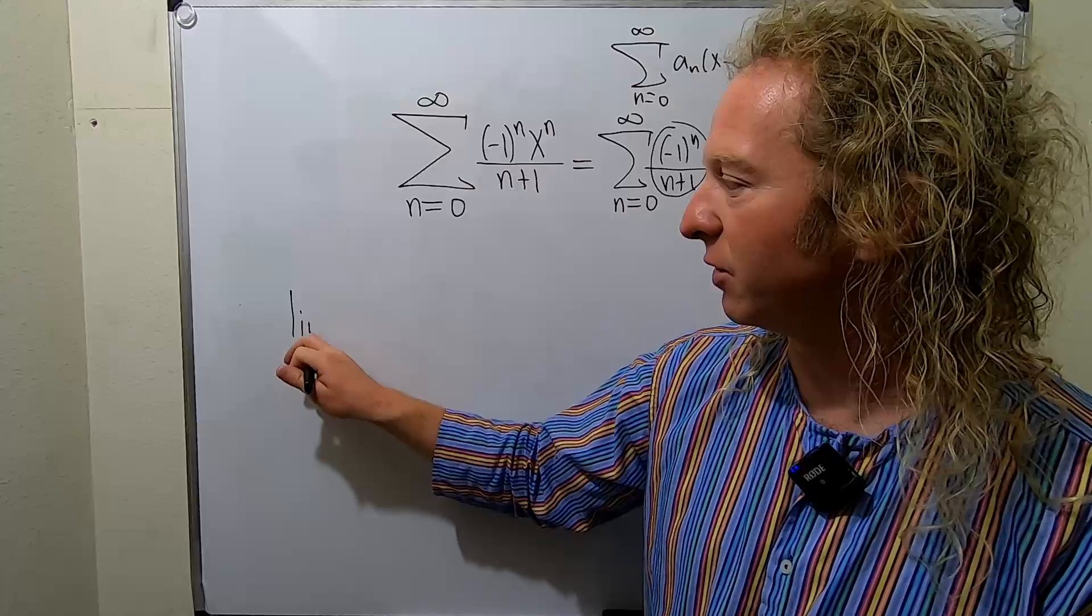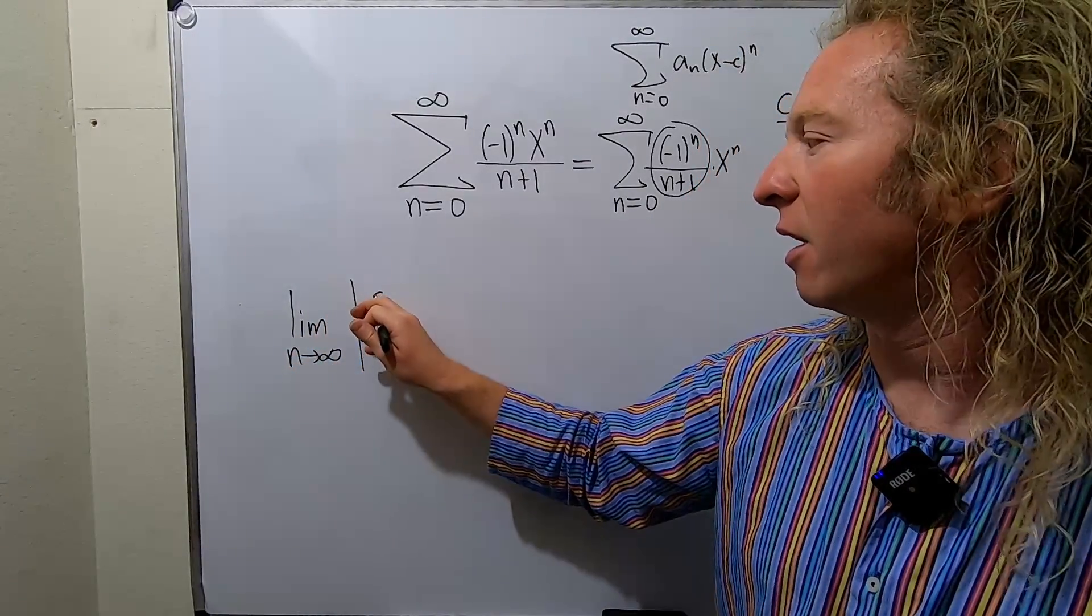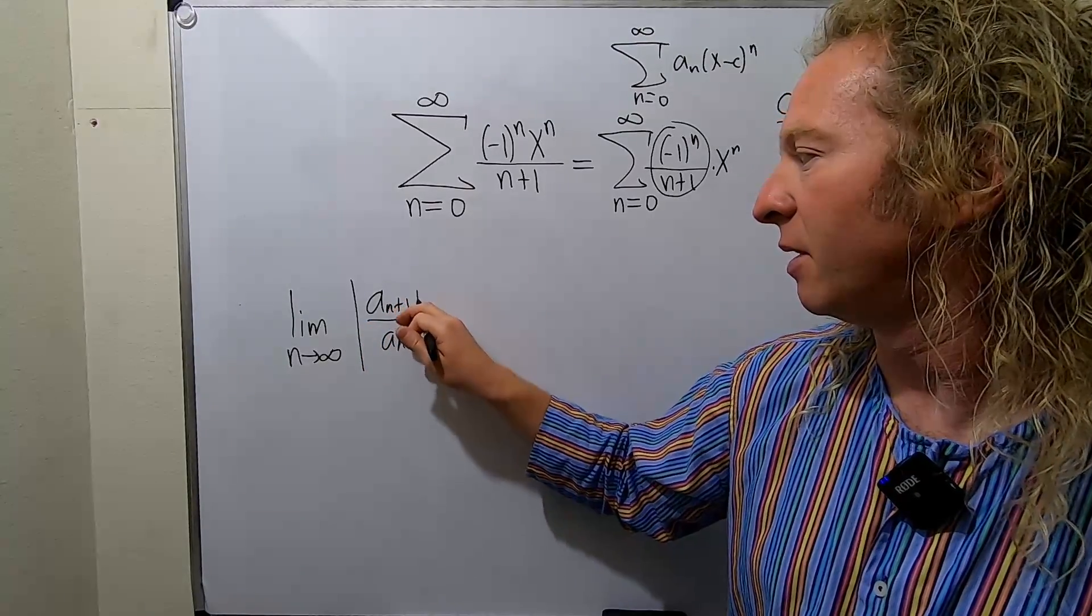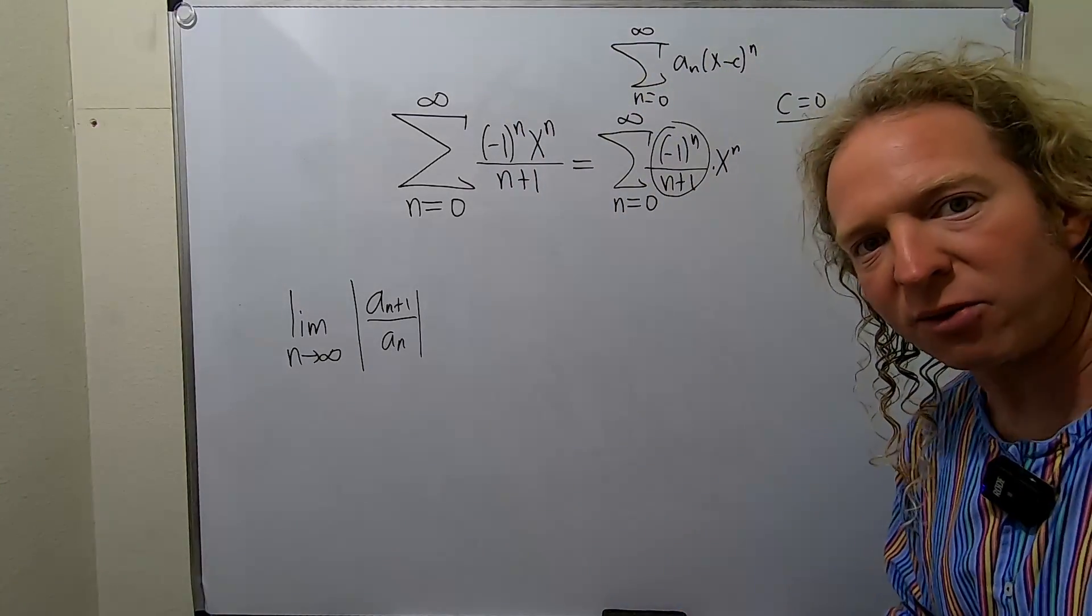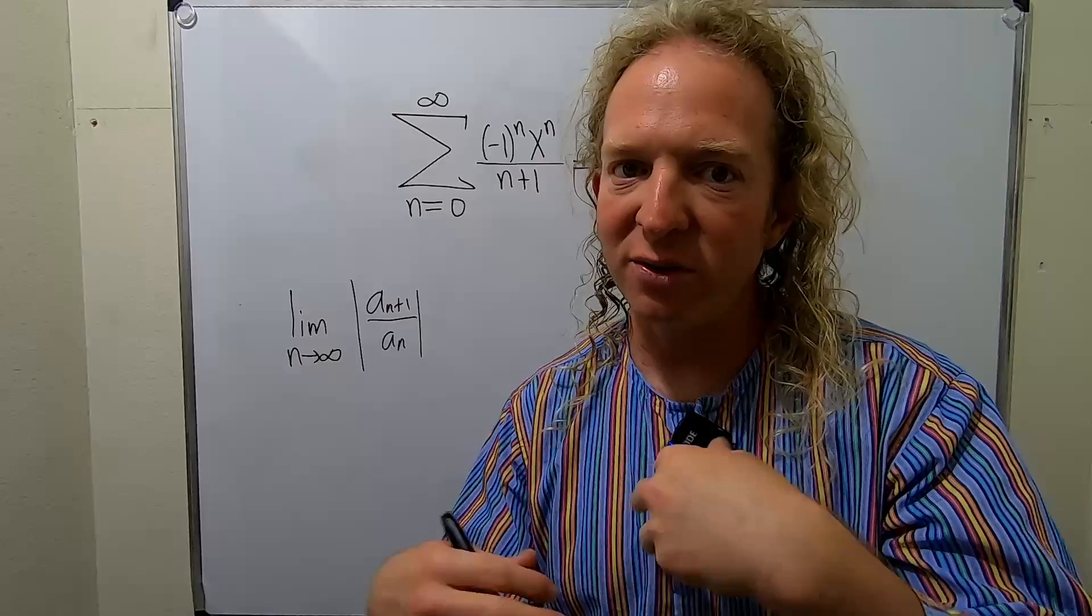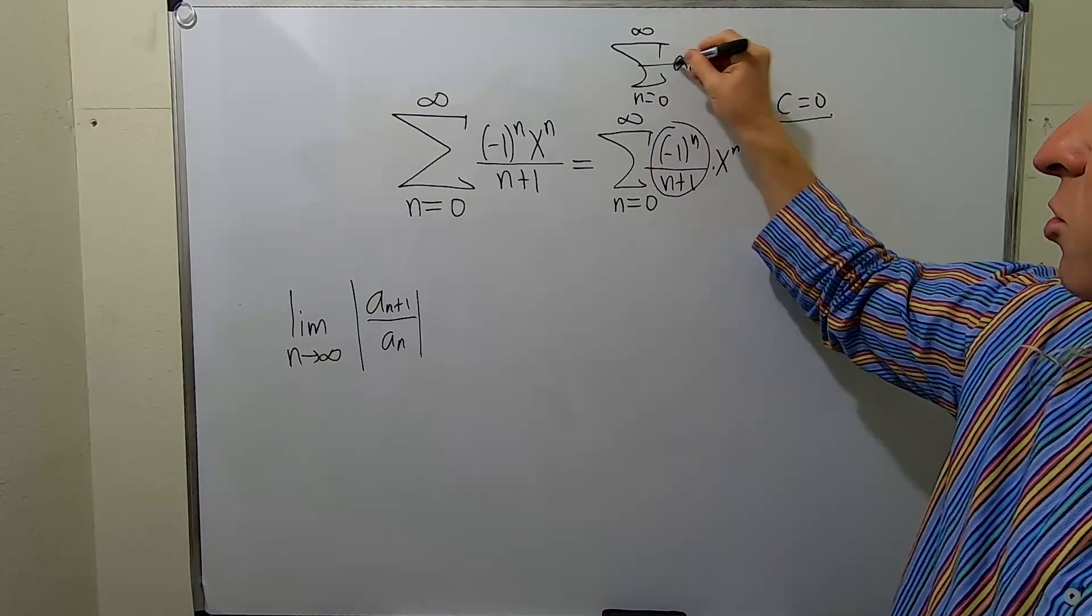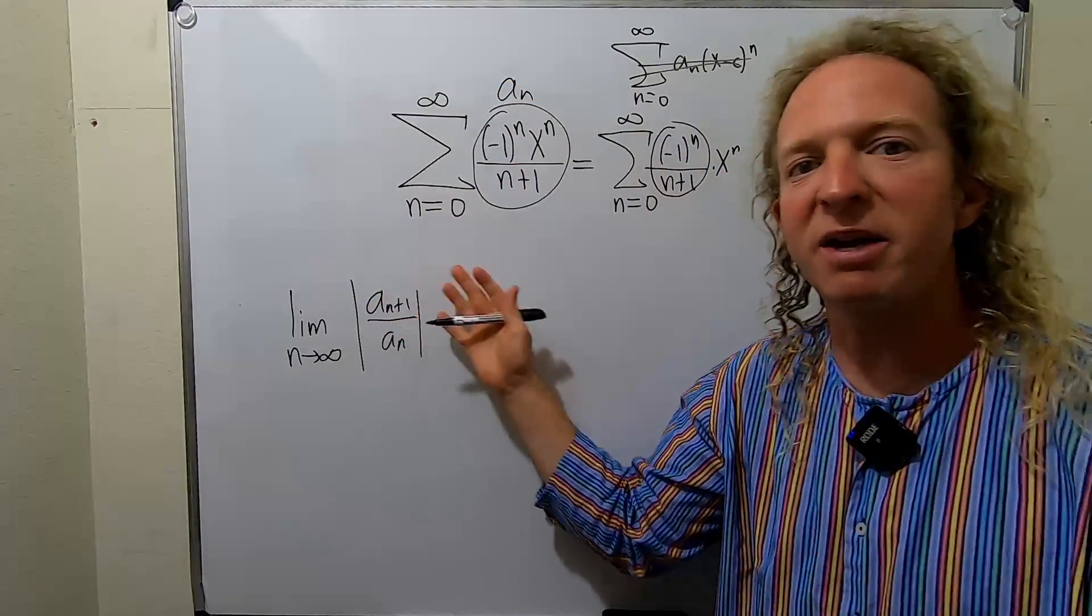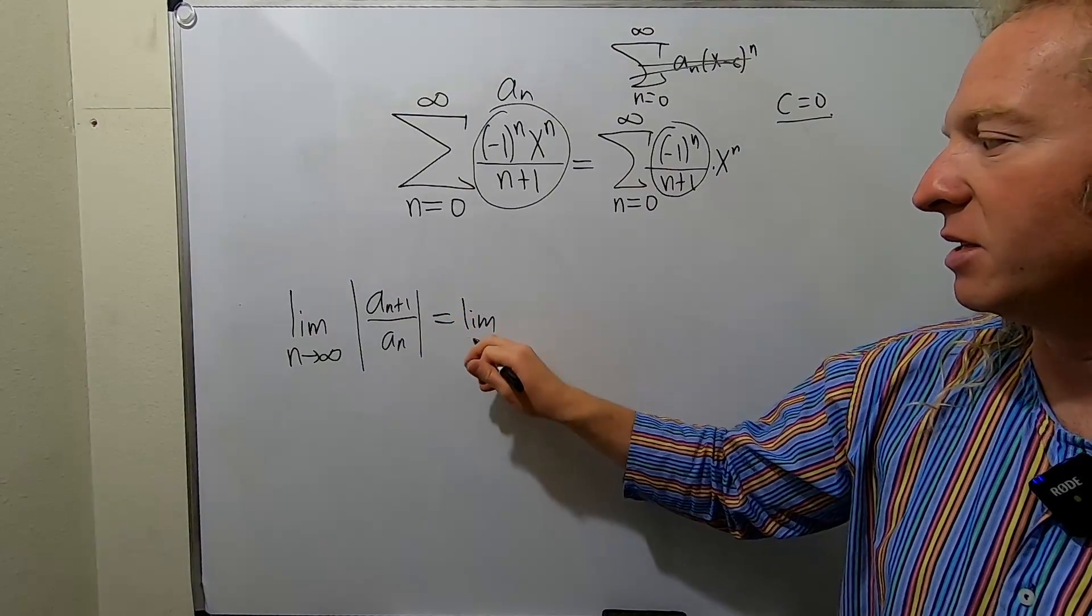The ratio test says if we take the limit as n goes to infinity of the absolute value of a sub n plus one over a sub n, if this limit equals one we have no information. If this limit is greater than one, the series diverges. And if it's less than one, the series converges. This is a little confusing because I called this piece a sub n, so ignore that for a minute. Let's call this whole thing here a sub n now. It's a different a sub n for the ratio test. So this is equal to the limit as n goes to infinity.